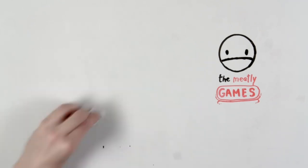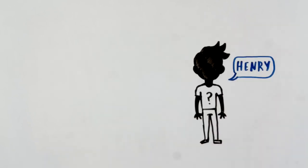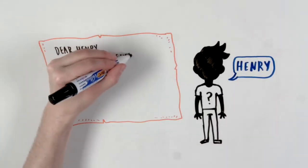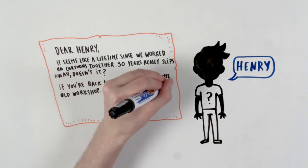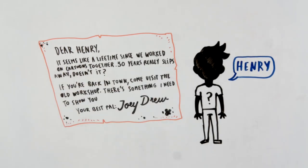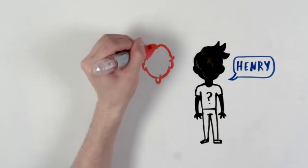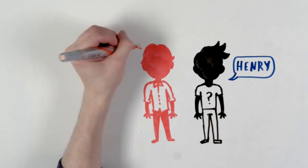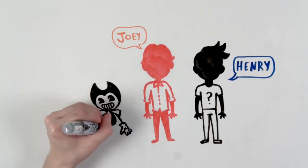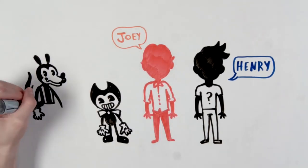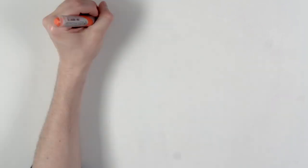The game follows Henry, a retired animator who returns to his old animation company upon an invitation from his old friend to be shown something important. We can guess that Henry and Joey worked together for a long time and developed a cartoon series called Bendy and Boris the Wolf. Both were the most important pieces in the episode to discover what had happened.